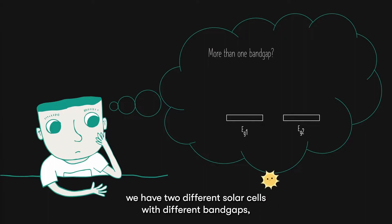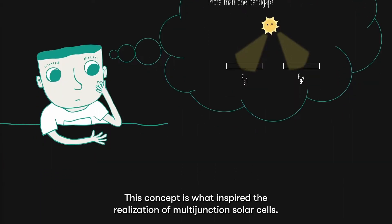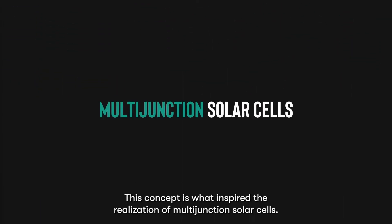What if we have two different solar cells with different band gaps, and we let each solar cell absorb a different range of solar spectrum? This concept is what inspired the realization of multi-junction solar cells.